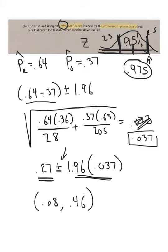That's our interval. So what we should expect is that the difference in proportions should be somewhere between these two numbers. We're 95% confident that the true difference in proportions of speeding red cars and other cars is somewhere between 8% and 46%. Notice, 0 is not in that interval. That supports our argument that we would reject the null hypothesis.